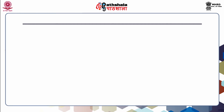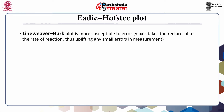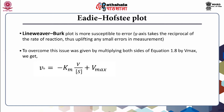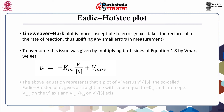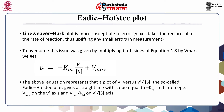Let us see what is the Eadie-Hofstee plot. The Lineweaver-Burk plot is more susceptible to error because the y-axis takes the reciprocal of the rate of reaction, amplifying small measurement errors. To overcome this, multiplying both sides of the Michaelis-Menten equation by Vmax gives a new equation. A plot of v₀ versus v₀/[S] — the Eadie-Hofstee plot — gives a straight line with slope equal to −Km and intercept Vmax on the v₀ axis.